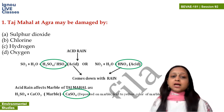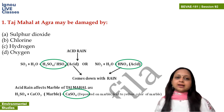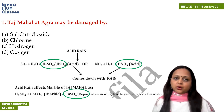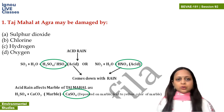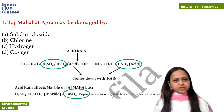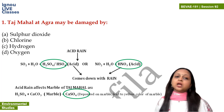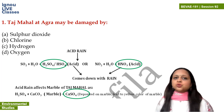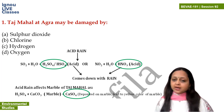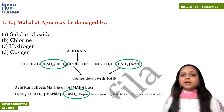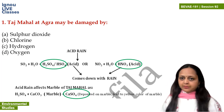Question is: Taj Mahal at Agra may be damaged by — options are sulfur dioxide, chlorine, hydrogen, and oxygen. So Taj Mahal at Agra may be damaged by... it is made of marble.